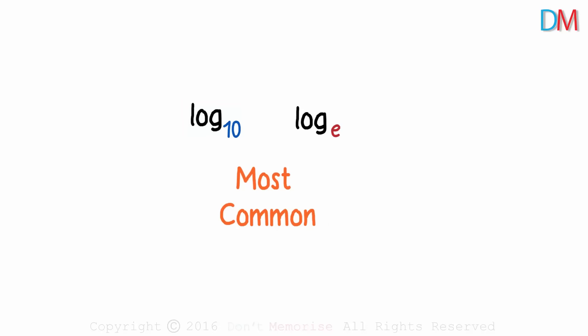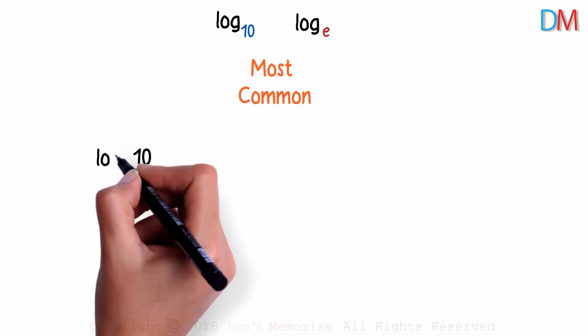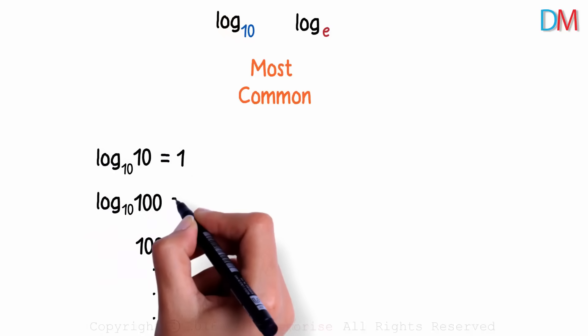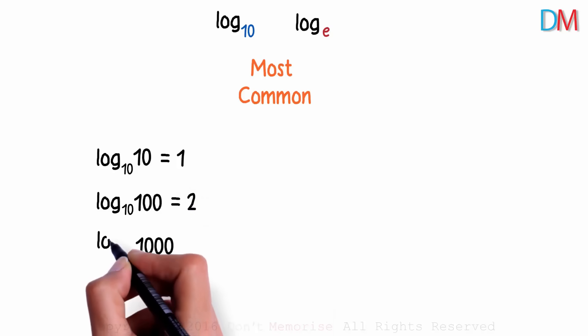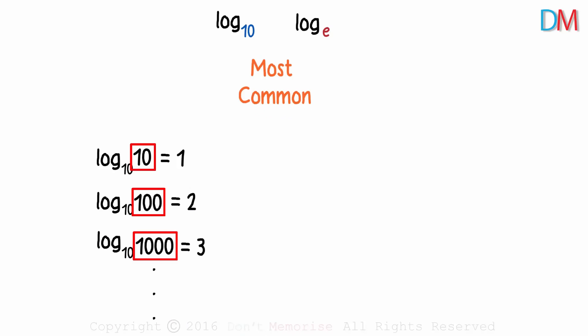Log to the base 10 is kind of intuitive. It's easier to talk in multiples of 10: 10, 100, 1000 and so on. Log to the base 10 gives us an easier scale to work with. Log 10 to the base 10 is 1. Log 100 to the base 10 is 2. 1000 to the base 10 is 3. And we can see that the multiples of 10 can be managed with a scale of natural numbers.